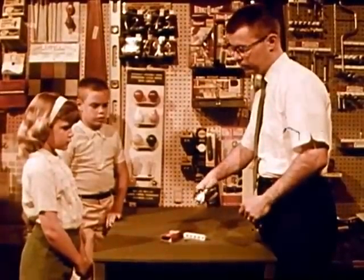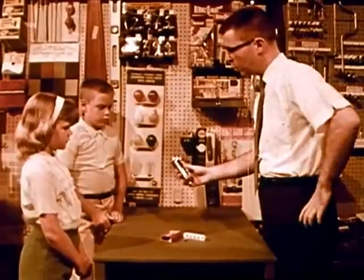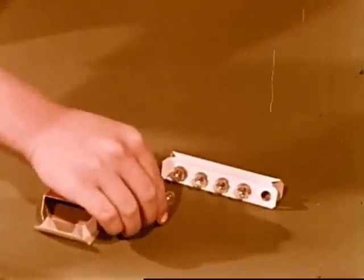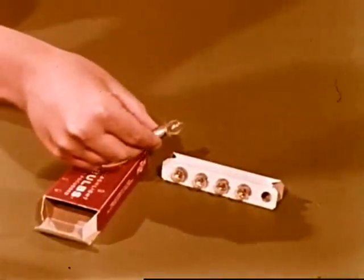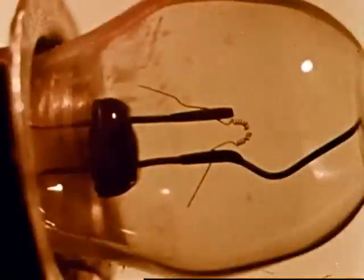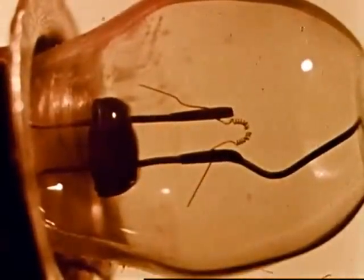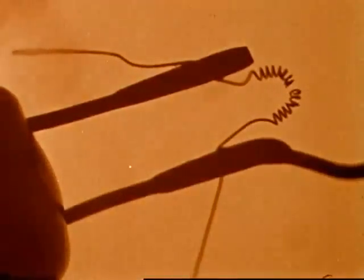There, now it's working. But why didn't it work before? What's wrong with the old bulb? Let's look at it very closely. The little wire right here is broken, and that's why the flashlight didn't work.